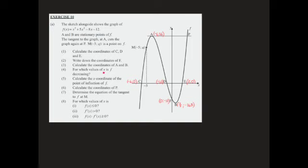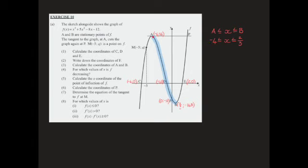So the next question: for which values of x is f decreasing? I'm looking for where our function is going down. It's going down over there, and that is between a and b. So I write that down: at a, x is negative 4, and at b, x is 2 over 3. The reason I've included those two numbers is because at a stationary point the function is both going up and going down, so the stationary points are included in that inequality.